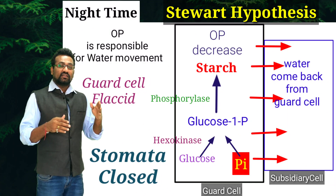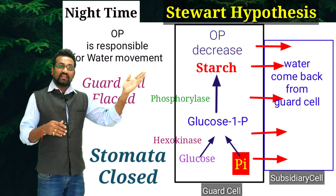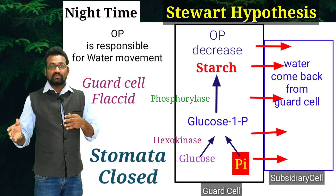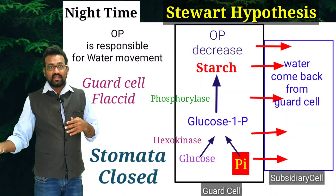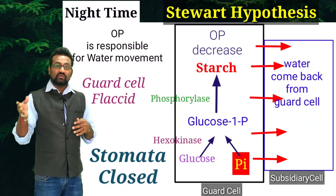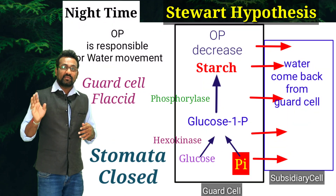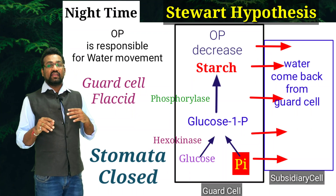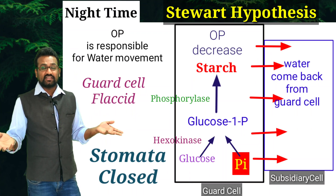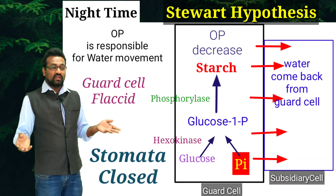pH plays a very important role: during high pH, various enzymes get active, and during low pH, different enzymes get active. At low pH, hexokinase-type enzymes become active. At high pH, phosphomutase and phosphatase enzymes become active. These are the key merit points presented in the Stewart hypothesis.